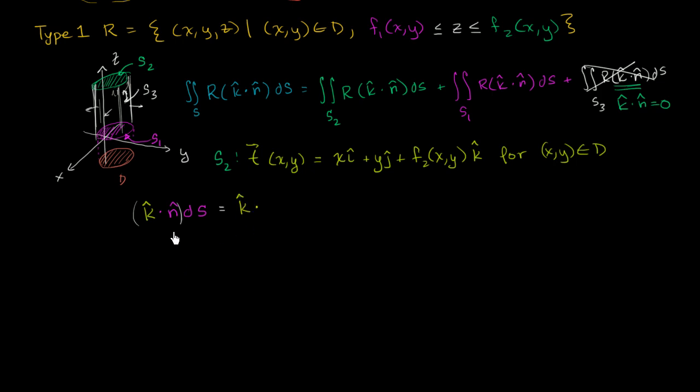This is the exact same thing as k dotted with the cross product of the partial of t with respect to x crossed with the partial of t with respect to y times a little chunk of our area, times dA.